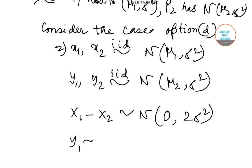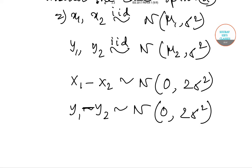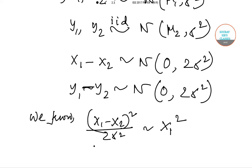y₁ - y₂ follows normal distribution with parameters 0 and 2σ². Now we know that (x₁ - x₂)² divided by 2σ² belongs to chi-square distribution, and similarly (y₁ - y₂)² divided by 2σ² also belongs to a chi-square distribution.